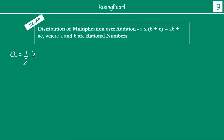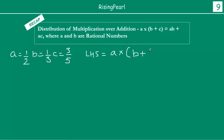Let A = 1/2, B = 1/3, and C = 3/5. So if we write the left hand side, it states A multiplied by (B plus C). So A is 1/2, multiplied by (B plus C), where B is 1/3 and C is 3/5.